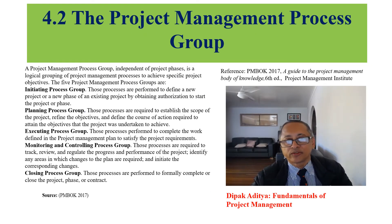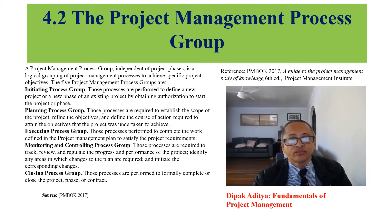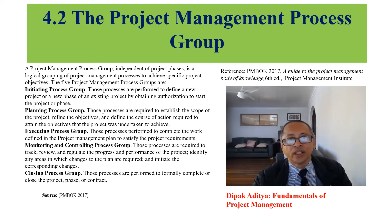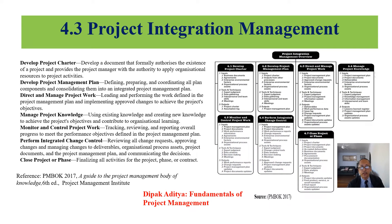The five project management process groups are: initiating process group, planning process group — which establishes the scope and project management plan — executing process group, monitoring and controlling process group, and closing process group. Project integration management ensures the transition of deliverables of the product, service, or result, and manages phase transitions when necessary.